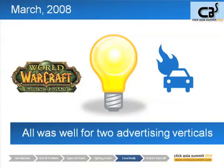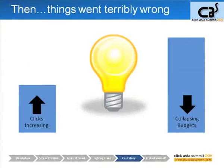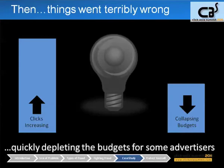In March 2008, all was well for both of these verticals. Then all of a sudden, things went terribly wrong. Clicks started increasing and their budgets collapsed. These clients have budgets — maybe a million dollars a month for the big auto insurance clients — and they expect to go through that million dollars pretty evenly. But the clicks started increasing quickly, budgets collapsed, and for some advertisers, especially in auto insurance, their budgets disappeared. They were used up, so they went dark. And $1.4 million dollars of advertising budget for the auto insurance vertical was gone just like that.